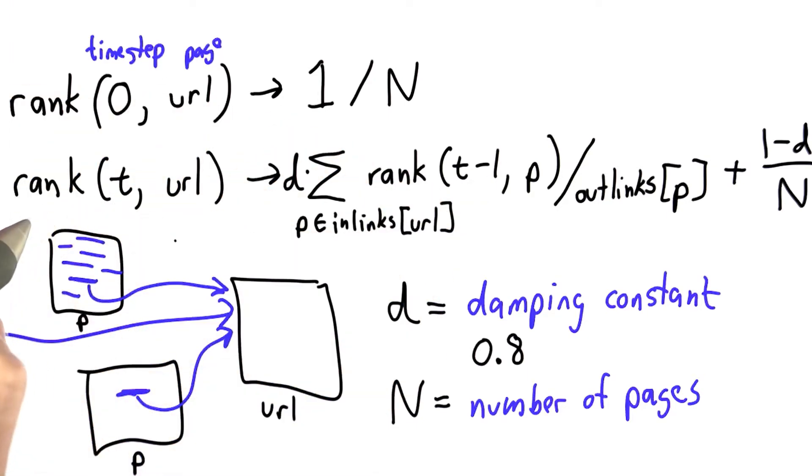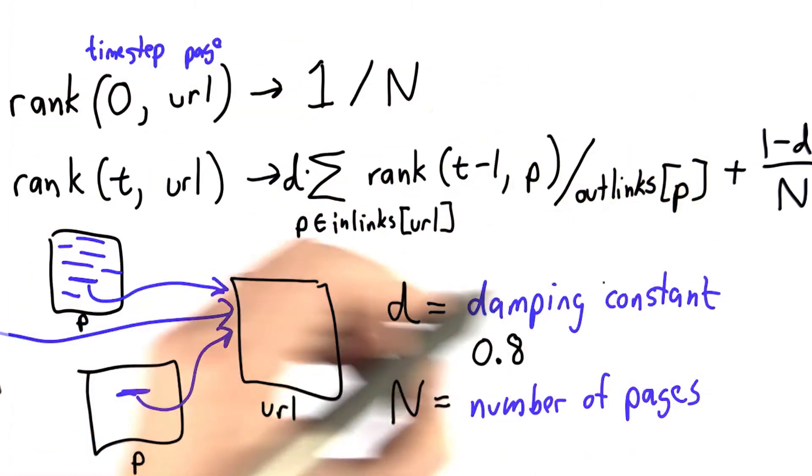The more time steps, the more accurate rankings we'll have, but the longer it will take. So we'll just pick a value for the maximum number of time steps, and we'll make our loop go through those steps, computing these equations. Let's work out the code to do that.